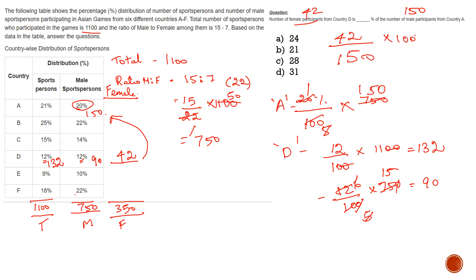So: 42 divided by 150, into 100. Simplifying — 3 goes into 42 fourteen times, and 3 goes into 150 fifty times. So 14 divided by 50, into 100. That gives 28%. The answer for this question is 28%.